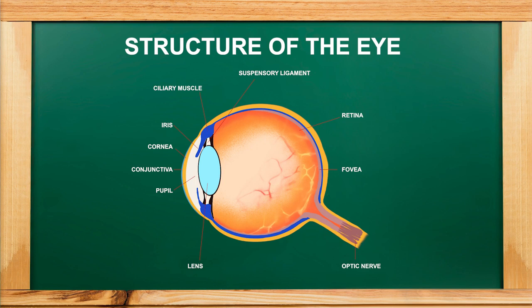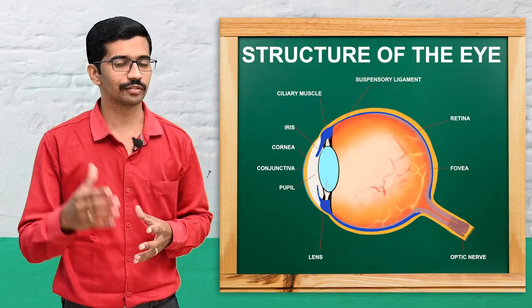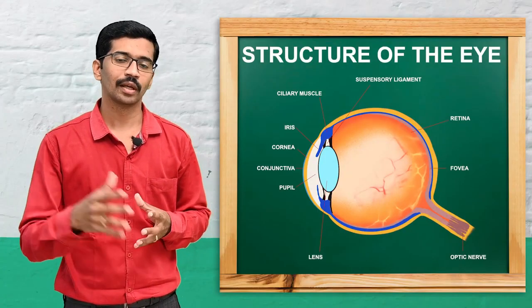The eye is broadly divided into two segments. One is the anterior segment and another is the posterior segment. The anterior segment is approximately 1/6 of the eyeball and the posterior segment is 5/6 of the eyeball.